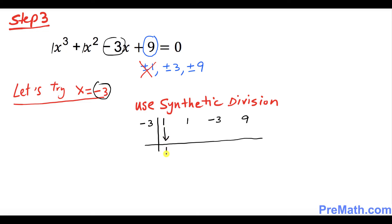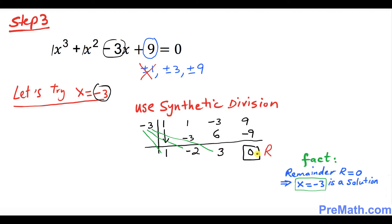Now we diagonally multiply: -3 × 1 = -3; then 1 + (-3) = -2. Multiply -3 × -2 = +6; then -3 + 6 = 3. Multiply -3 × 3 = -9; then 9 + (-9) = 0 as our remainder. Since the remainder is 0, x = -3 is indeed one of our solutions.